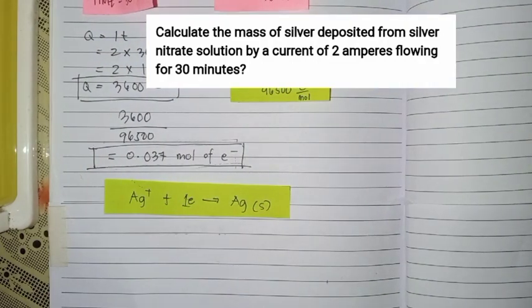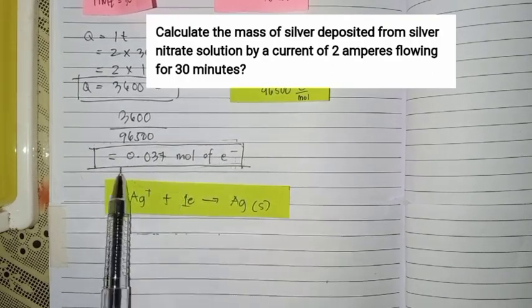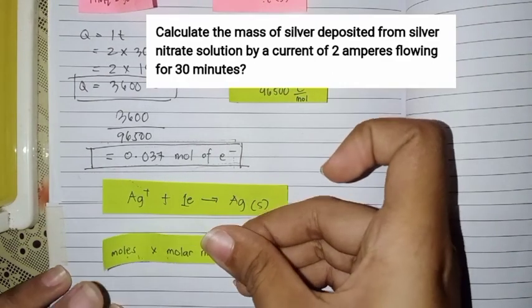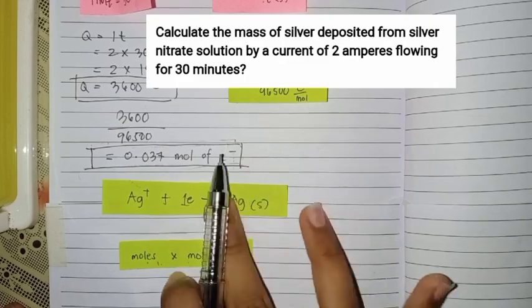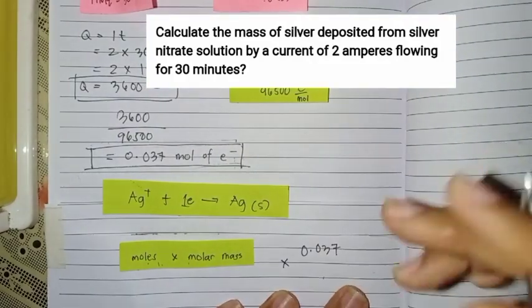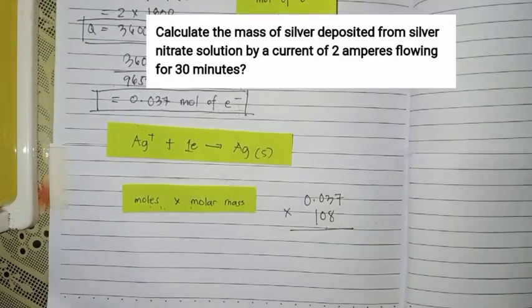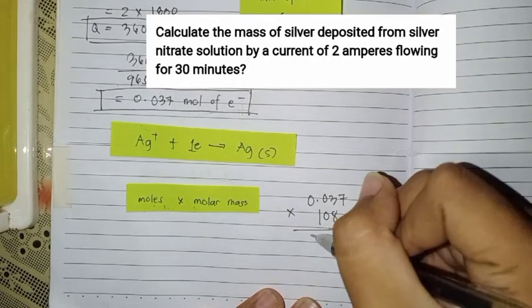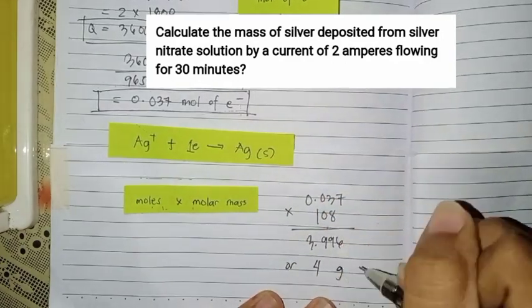The difference from the previous problem is we needed to write a proportion because 2 electrons were needed. But here, only 1 electron. So we will directly multiply this by its molar mass, the silver, to get the answer. Since it's 1 electron, we don't need to divide anymore. 0.037 mol times the molar mass of silver which is 108 equals 3.996 or 4 grams of silver.